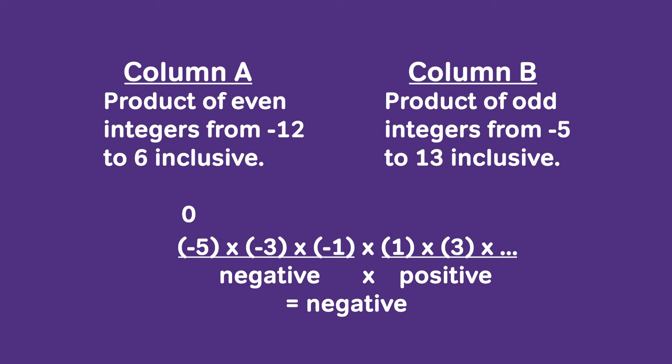So we now know that column B has a negative value and column A is equal to zero. So as you can see, column A must be greater than column B, which means our answer is A.